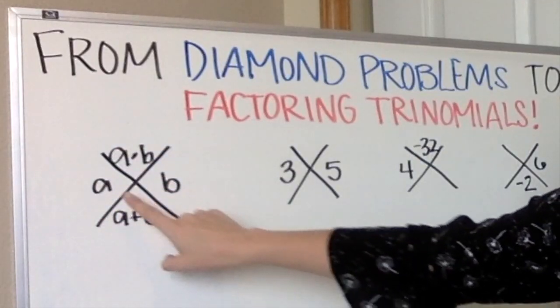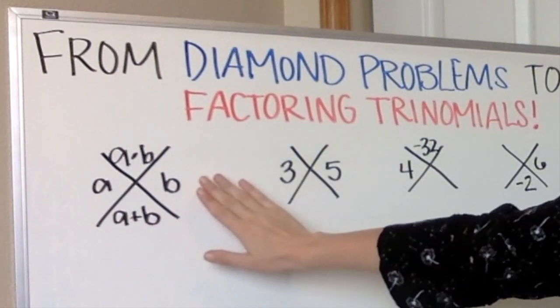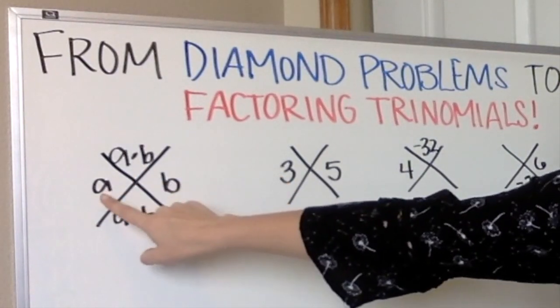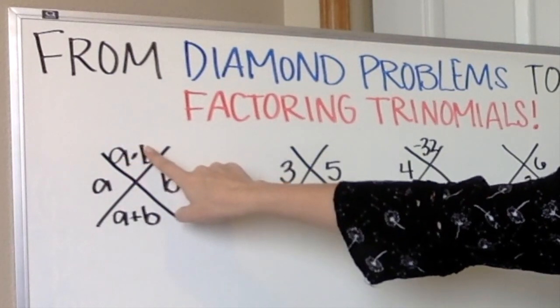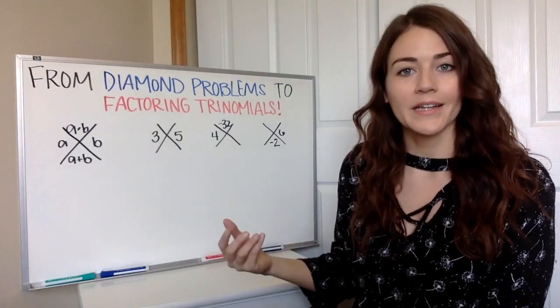What a diamond problem is is they'll give you two out of four of these things. These two are just the numbers. The top is those numbers multiplied together. The bottom is those numbers being added.